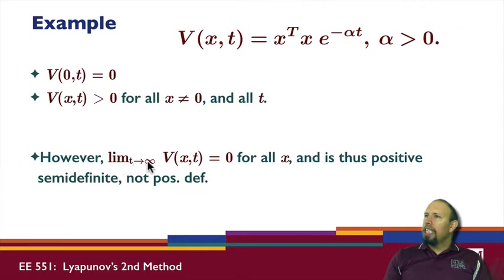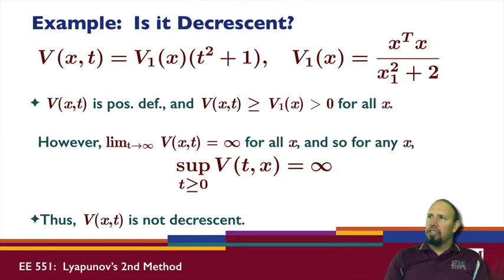However, when we take the limit as t goes to infinity of this, we get 0 for all x, regardless of the x. And this function, thus, is only positive semi-definite and not positive definite. That doesn't deal directly with decrescency, but it does deal with Lyapunov-type functions that are functions of time as well.